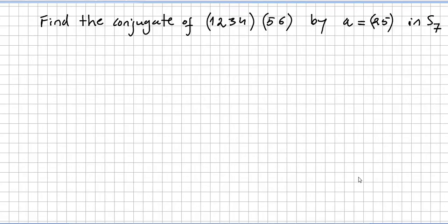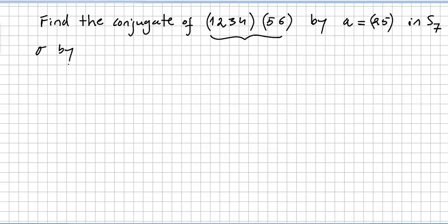These videos will be answers to a couple of questions I got. The first one is: find the conjugate of cycle (1 2 3 4)(5 6) by a = (2 5) in S7. Let us remind you that the conjugate of sigma by a — written phi_a(sigma) — will be a sigma a inverse.